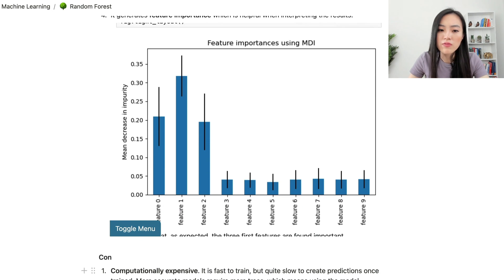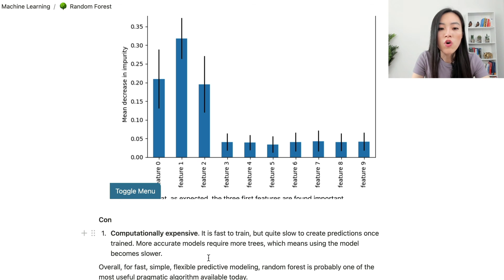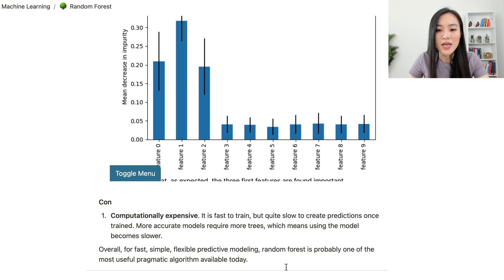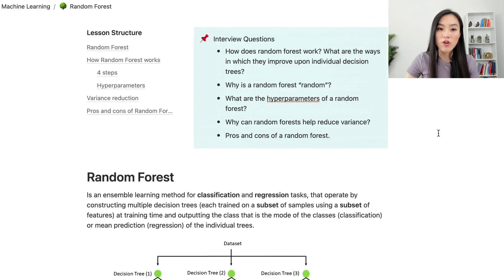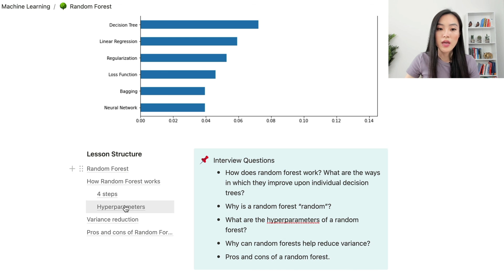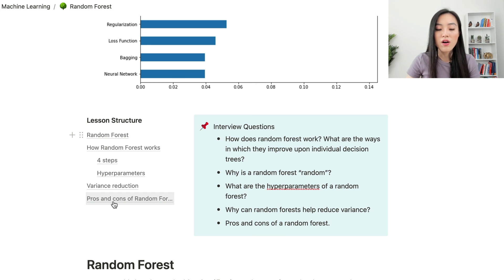In terms of cons, a random forest model is computationally expensive — it is fast to train but quite slow to create predictions once trained. More accurate models require more decision trees, which makes using the model slower. Overall though, for fast, simple, flexible predictive modeling, random forest is probably one of the most useful pragmatic algorithms available today. In this lesson we learned how random forest works, its four-step algorithm, hyperparameters, variance reduction, and pros and cons.